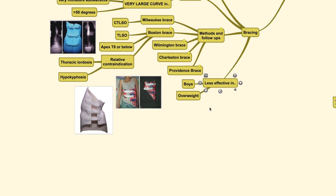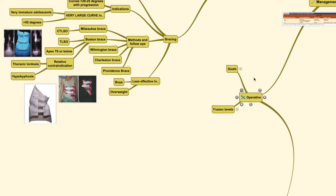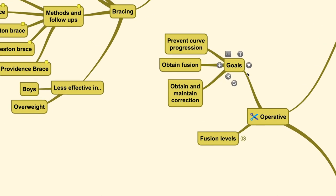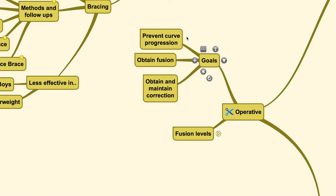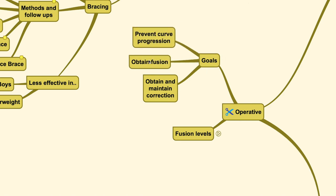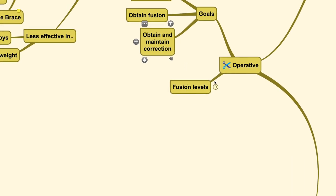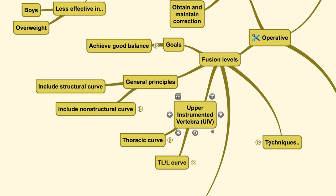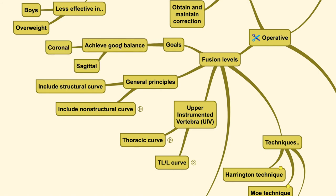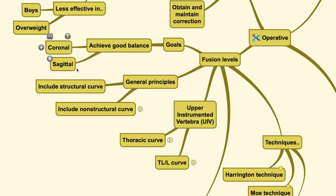Bracing is generally less effective in boys and those who are overweight. If non-operative treatment has failed, operative treatment is pursued with the goals of preventing curve progression, obtaining fusion, and maintaining correction. The fusion levels are chosen according to goals of achieving good coronal and sagittal balance — the aim is not to fully correct the curve, but to reach a point where the spine is balanced.